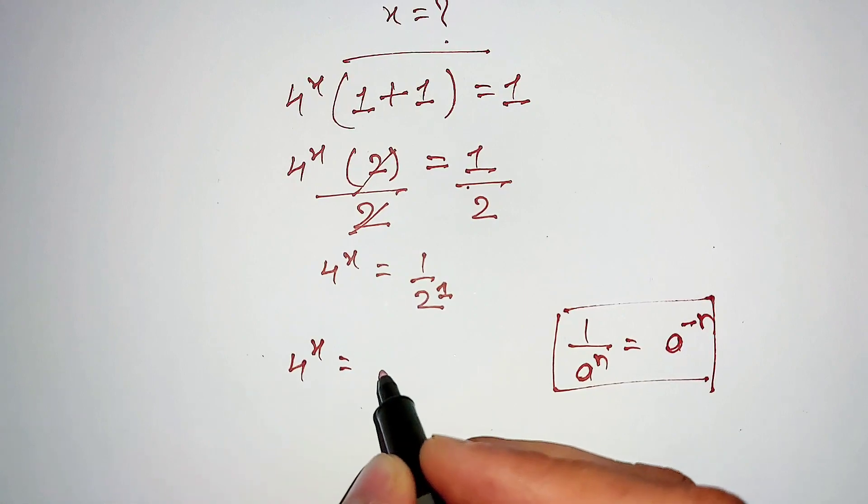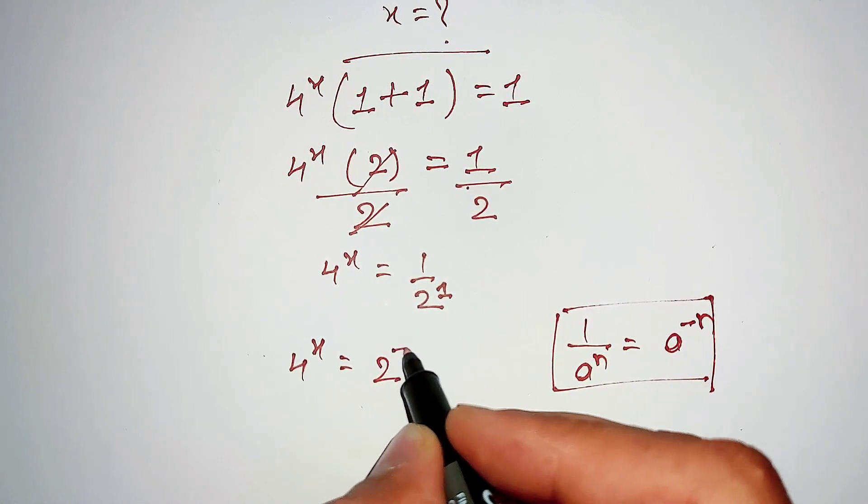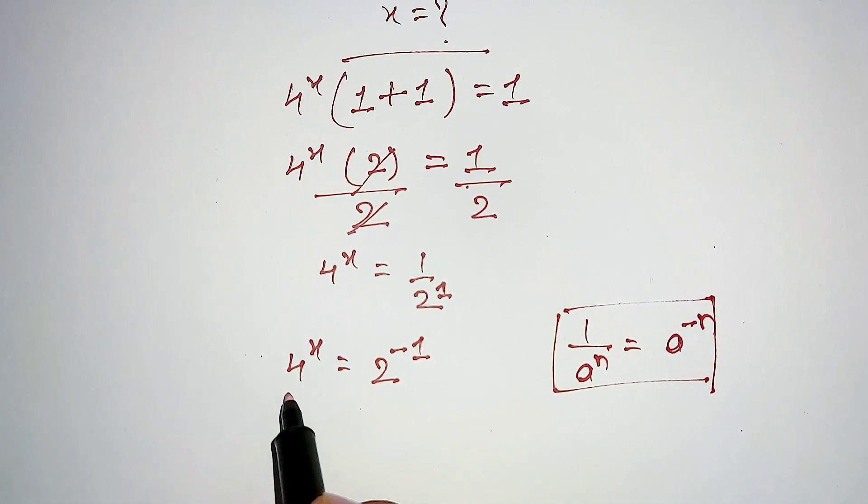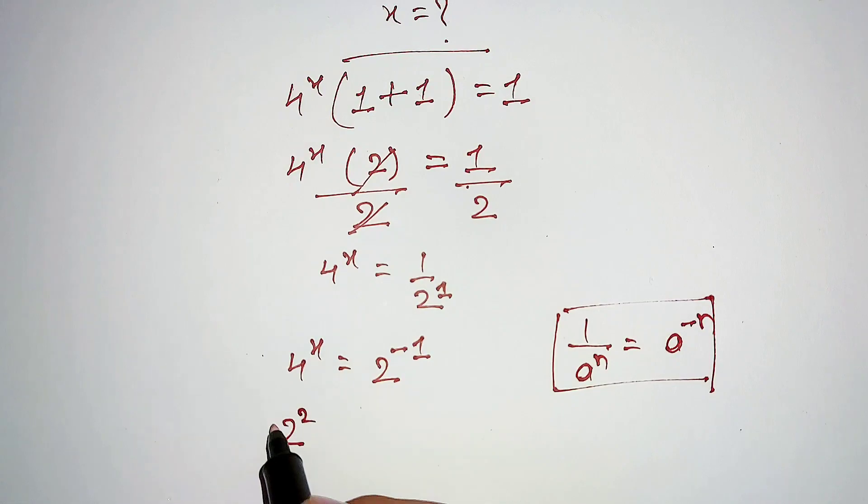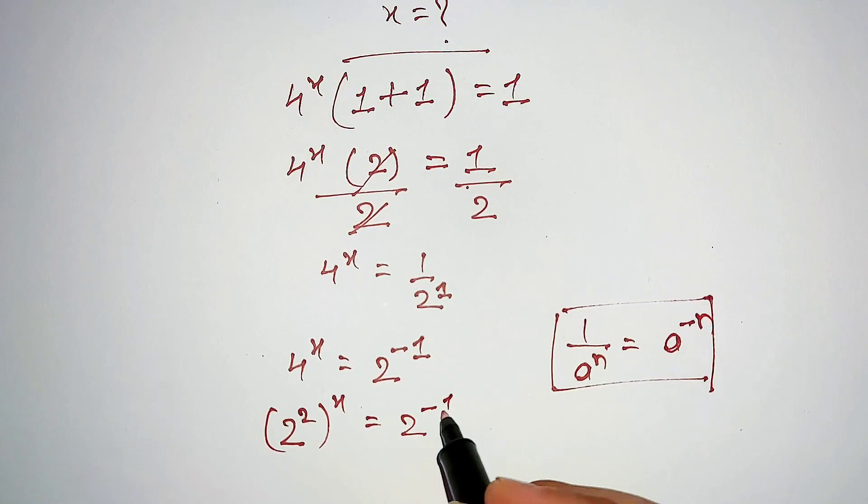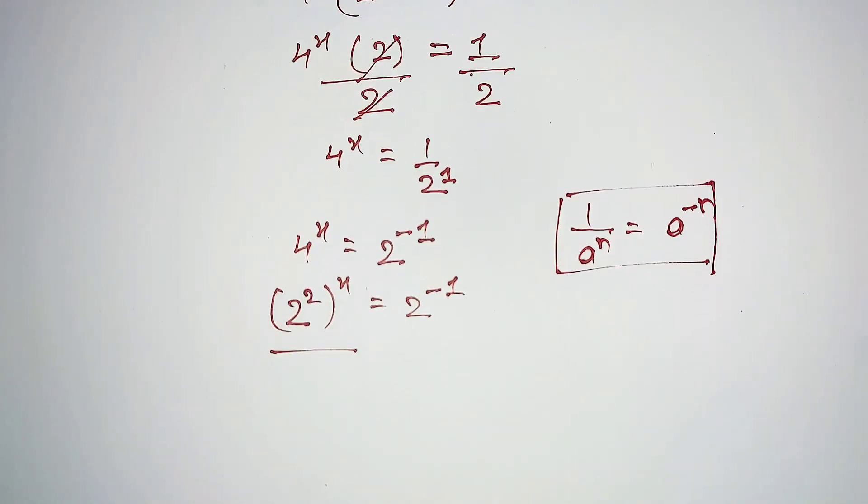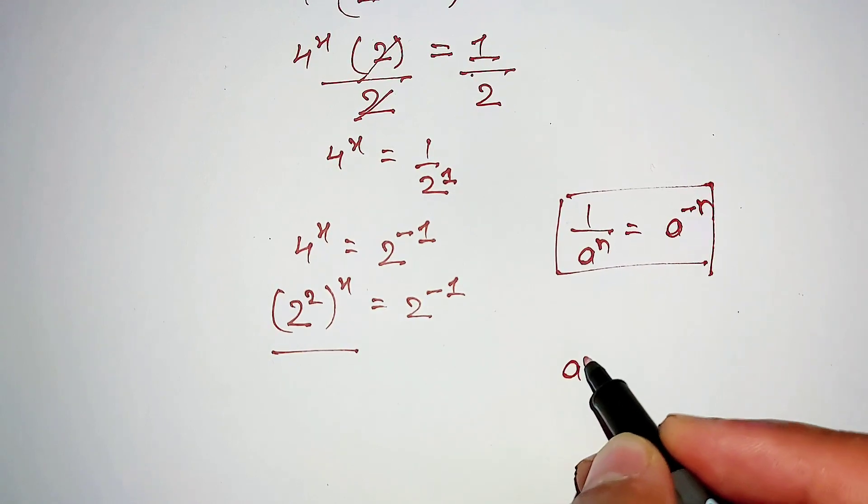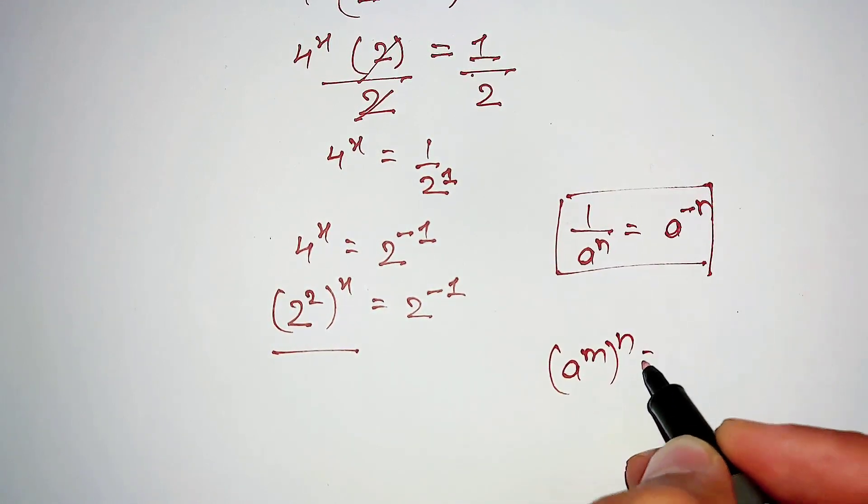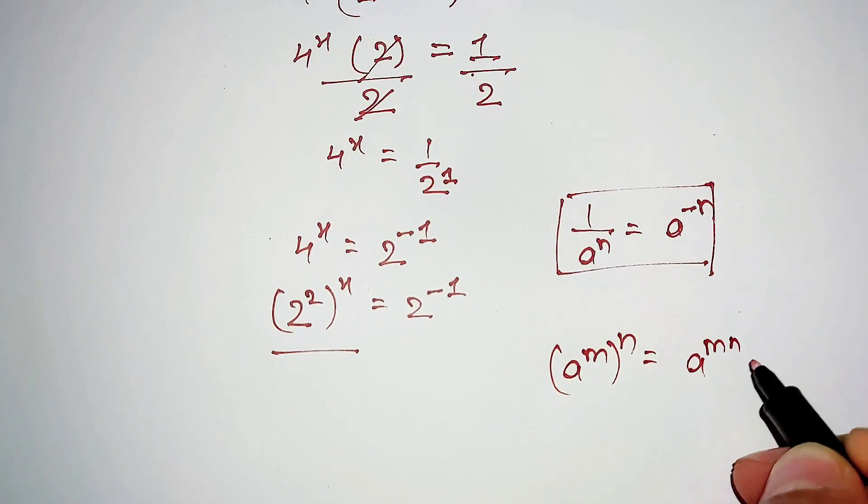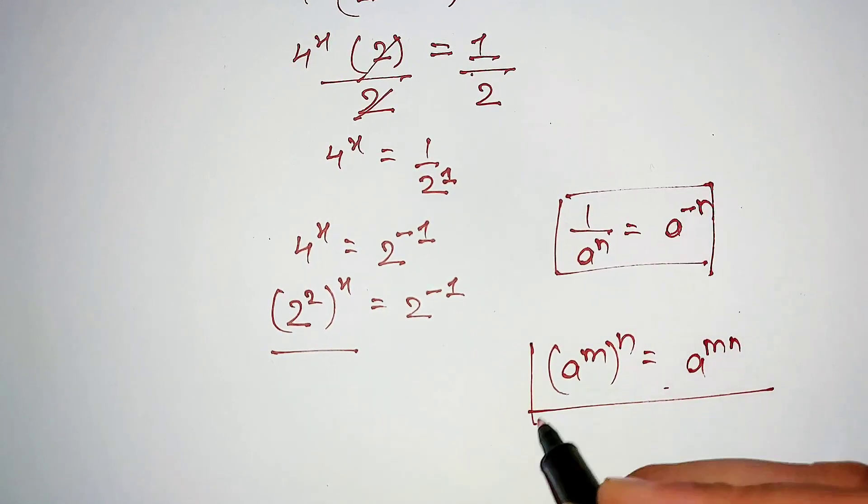In the next step, this 4 can be written as 2^2, whole power x equals 2^(-1). Again we are using this exponential property: (a^m)^n is same as a^(m×n). Using this property...